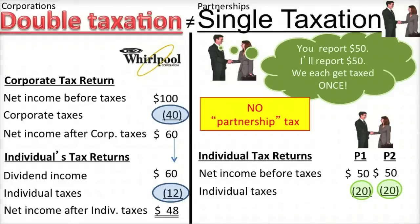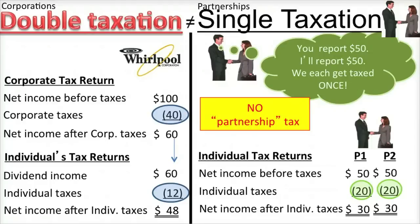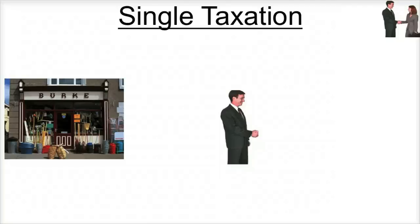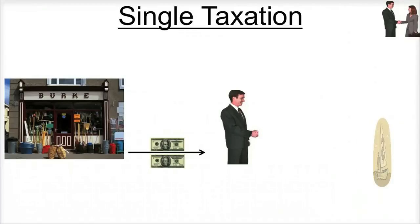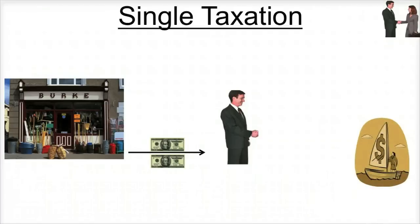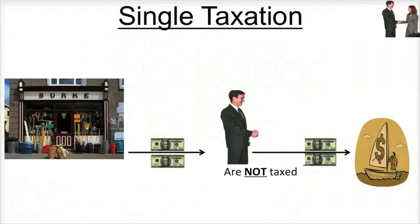Therefore, the income of partnerships is subject to single taxation, just like sole proprietorships. Single taxation is an advantage of partnerships. Now, when a partner actually needs funds out of the partnership for personal reasons, such as to buy a boat, the partnership can make a capital distribution to him or her, which is similar to the payment of a dividend by a corporation. But unlike dividends from corporations, capital distributions to partners are not taxable.